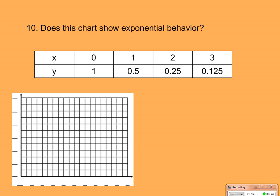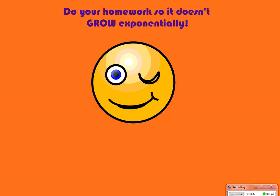Does this next chart show exponential behavior? The data starts at 1, then goes to 0.5, 0.25, 0.125 — halving each time. Plotting these: at 0 I'm at 1, at 1 I'm at 0.5, at 2 I'm at 0.25, and at 3 I'm at 0.125. I would argue yes, that could be exponential. All right — do your homework so it doesn't grow exponentially. Have a good day, and we'll talk to you soon.